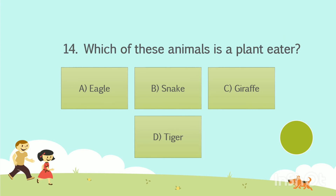Question number 14. Which of these animals is a plant eater? Option A: Eagle. Option B: Snake. Option C: Giraffe. Option D: Tiger. Your time starts now. The answer is Option C, Giraffe.